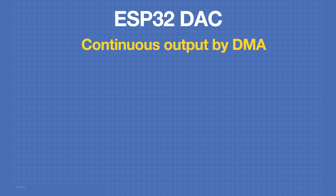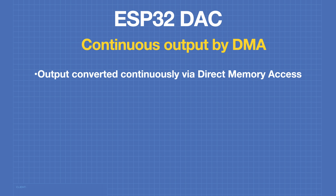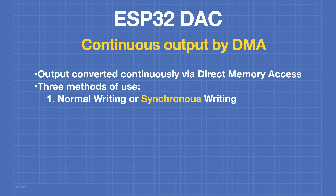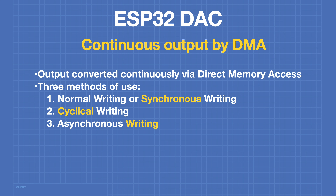Another method of outputting to the DAC is to use the DMA, or direct memory access, buffer. There are three methods of use. Normal writing, or synchronous writing, takes the output of the buffer and sends it to the DAC continuously. With cyclical writing, the data in the buffer is looped and repeated — often used for generating waveforms. Asynchronous writing requires an external callback signal to synchronize the DMA and DAC output.